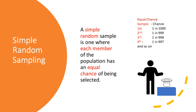What does that mean? Let's take an example. Suppose you have 1000 persons in a population. The first person has a chance of 1 in 1000 of being selected. The second one, 1 in 999. The third one, 1 in 998. And it goes on like this. In other words, statistically speaking, each person has an equal chance of being selected.